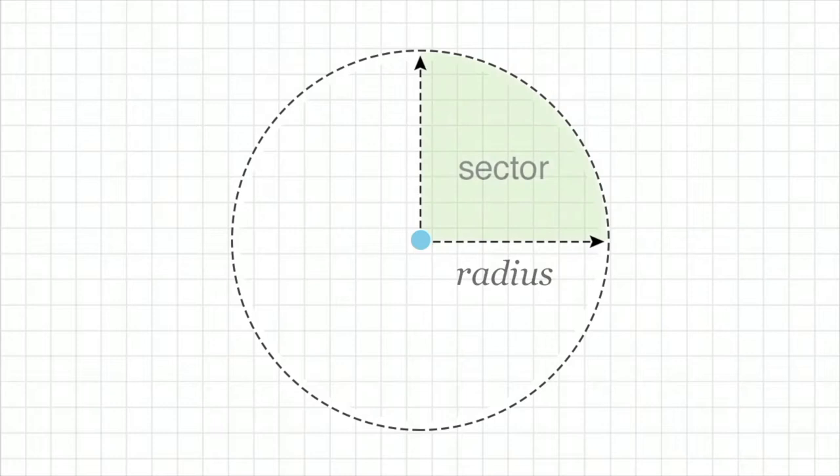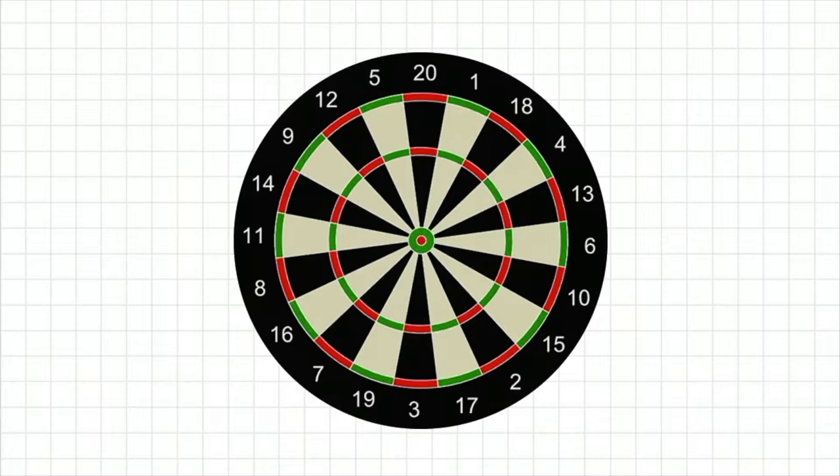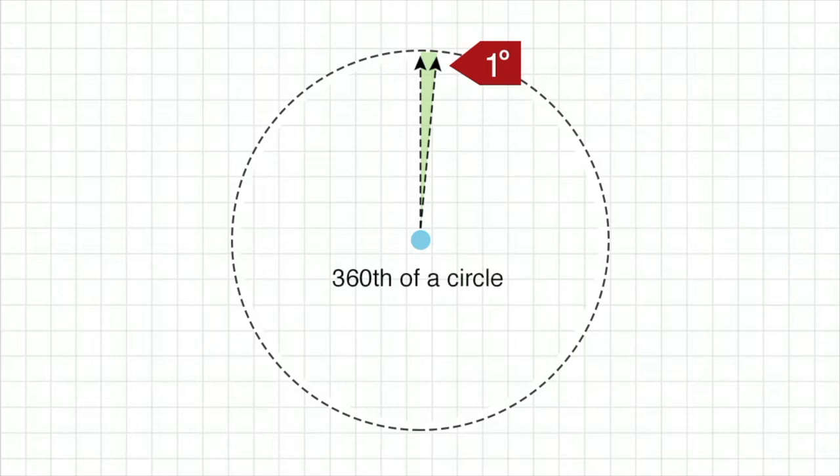The radius is also used to measure a fraction of the circle, called a sector. A sector is made of 2 radii that meet at the center and intersect with the circumference. For example, a dartboard pattern is made of 20 sectors.